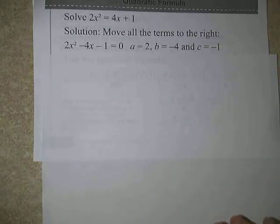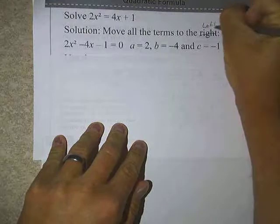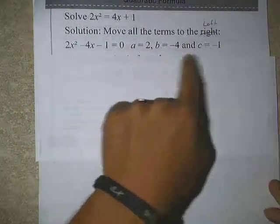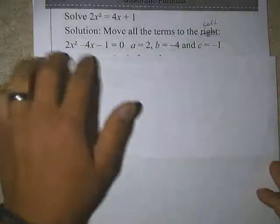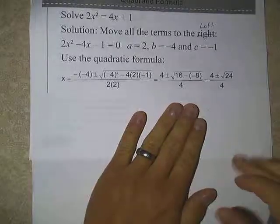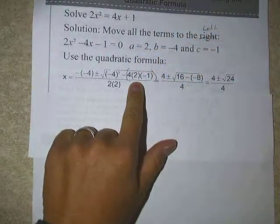All right. Let's take a look at another one. We have this one that says 2x squared equals 4x plus 1, just like before. We need to get everything on the same side so we can identify the a, b, and c. So we'll move everything over to the left. Move all terms to the left, I guess. Not the right over here. Identify the a, the b, and the c. Get everything set on one side, 0 on the other.